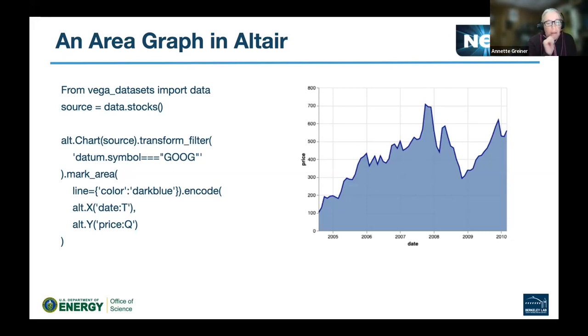So it's pulling in source as the data file. And then it's doing a transformation even. So it's filtering a bunch of stock data and it's pulling out only the items that have Google as the stock ticker symbol.